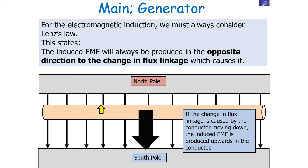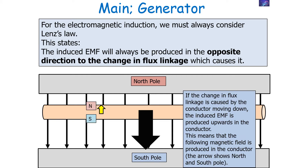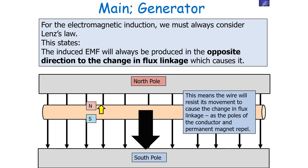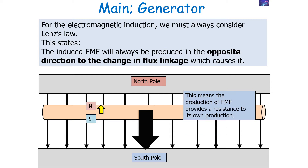So for electromagnetic induction we must always consider Lenz's law, which states the induced EMF will always be produced in the opposite direction to the change in flux linkage that causes it. If the change in flux linkage is caused by the conductor moving down, the induced EMF is produced upwards in the conductor. This means a magnetic field is produced in the conductor, and the wire will resist its movement, as the poles of the conductor and the permanent magnet will repel each other. So the production of EMF provides a resistance to its own production.